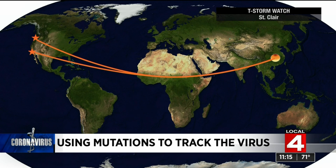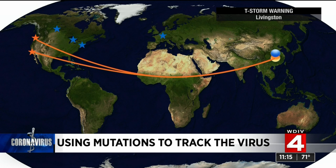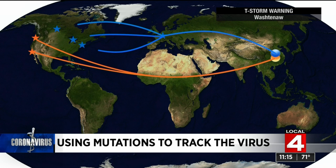Now suppose at the same time the orange mutation occurred, there was a different mutation — we'll call it the blue mutation. Through genetic sequencing, the blue mutation was found in China, Europe, Canada, New York, and Michigan. That would suggest there was a set of transmissions of the virus linking those places. We can't say for certain the order of spread, but we know they're related.